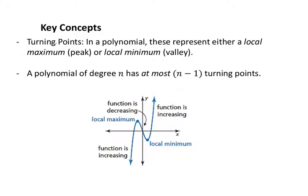Turning points are also referred to as a local maximum — a small peak in the graph — or local minimum, a valley. It's where we switch from increasing to decreasing, or vice versa — that's why we call it turning. A polynomial of degree n has, at most, n minus 1 turning points, but it could have fewer. And remember, decreasing means sloping down to the right.